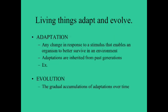The last characteristic is that living things must be able to adapt and evolve. An adaptation is basically any change that enables us to better survive. Evolution is a gradual accumulation of all these adaptations over time. Sometimes those adaptations are great, but if things evolve the wrong way and don't adapt properly to their environment, that species can go extinct.